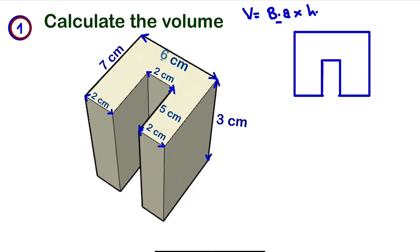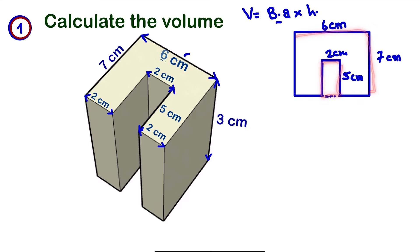Looking at this prism, this dimension here is 6 centimeters and the width here is 7 centimeters. Then this part that has been cut — we have 2 centimeters here and also 5 centimeters. So whenever something is cut, we subtract. We are going to look at the area of this rectangle minus the area of this part that has been cut.